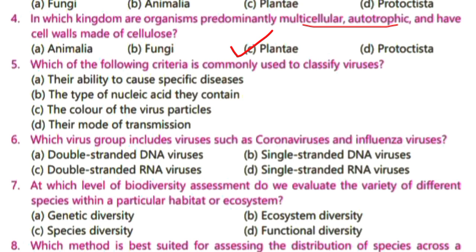Question 5: which of the following criteria is commonly used to classify viruses? Options: their ability to cause specific diseases; the type of nucleic acid they contain; the color of the virus particles; their mode of transmission. Viruses are classified based on several characteristics including their genetic material, replication strategy, morphology, and the hosts they infect. So B is the correct option — the type of nucleic acid they contain.